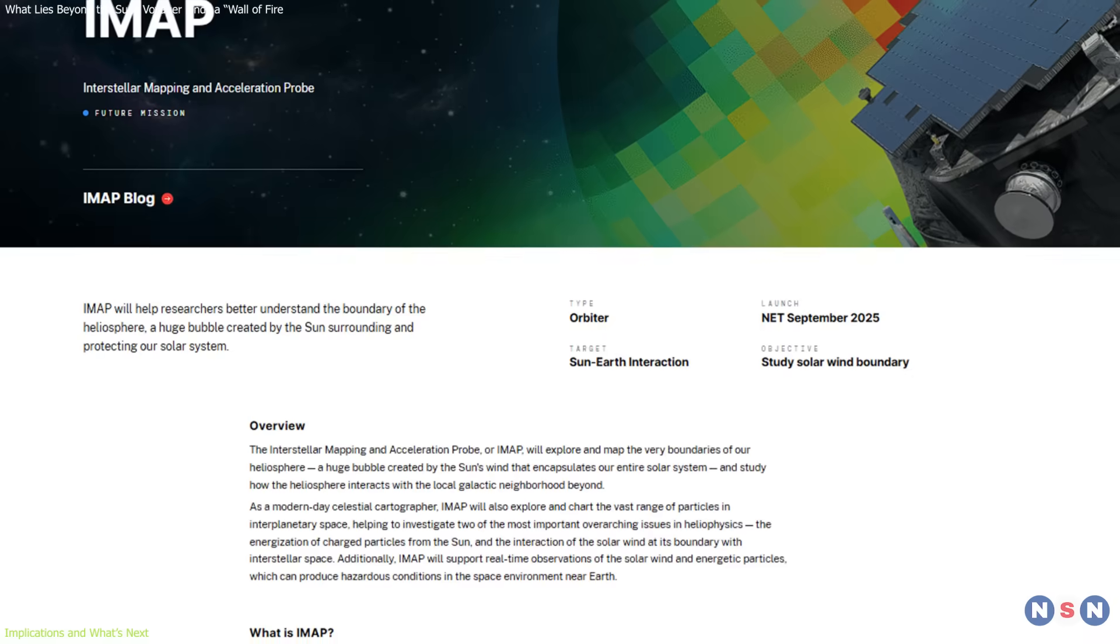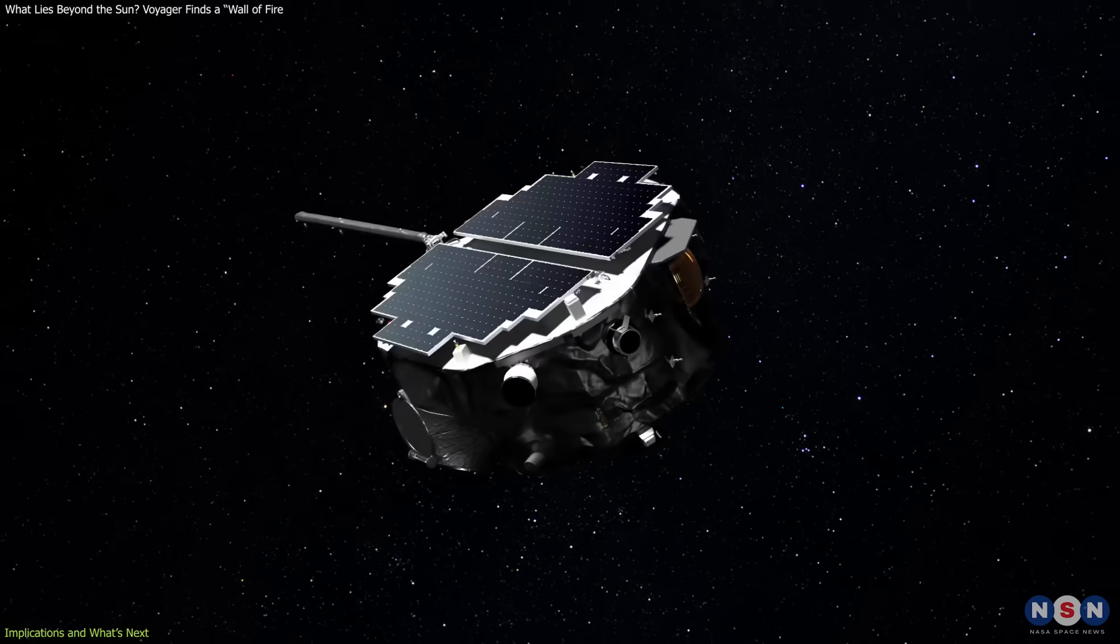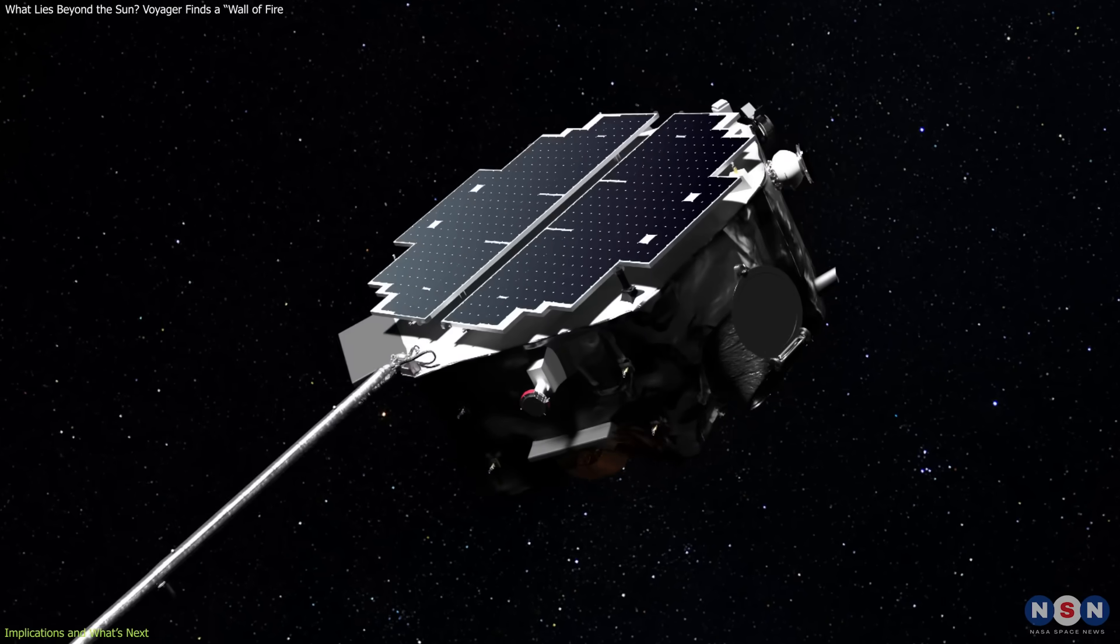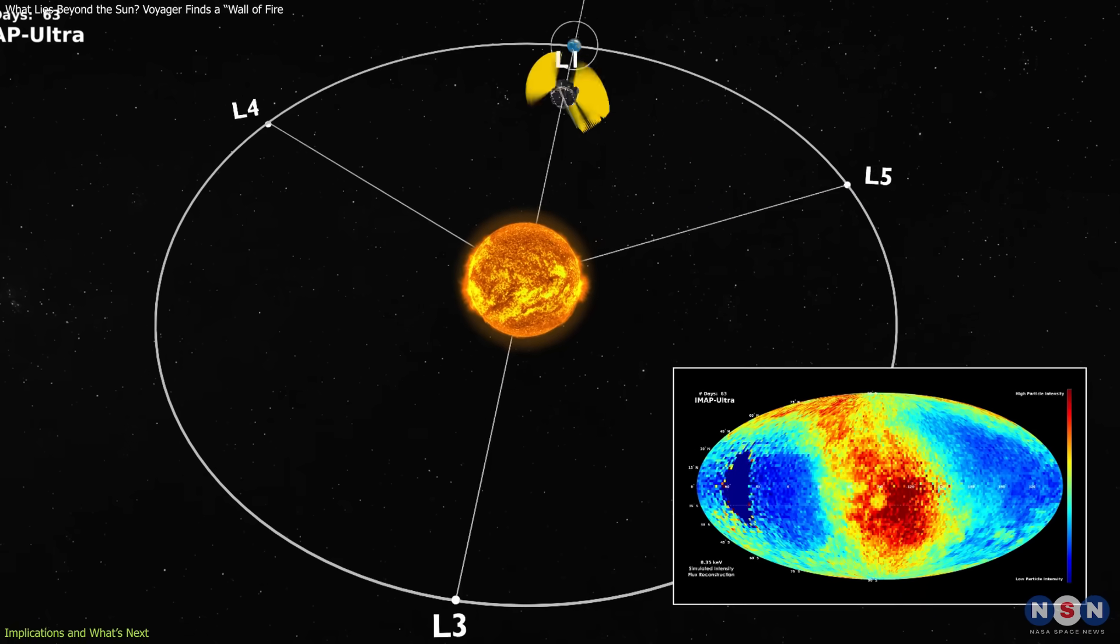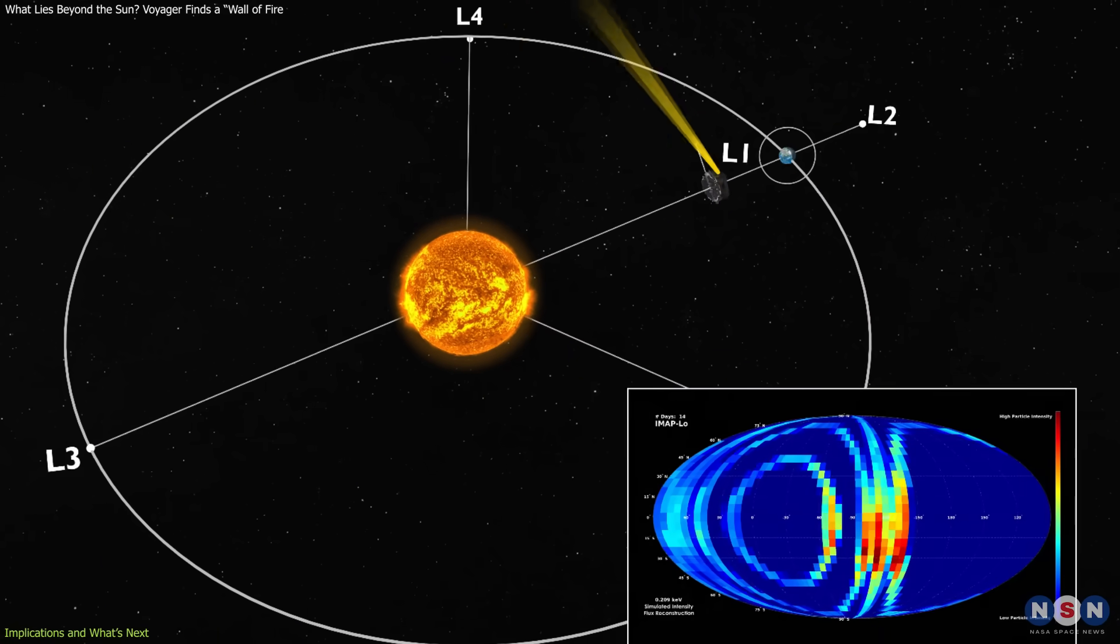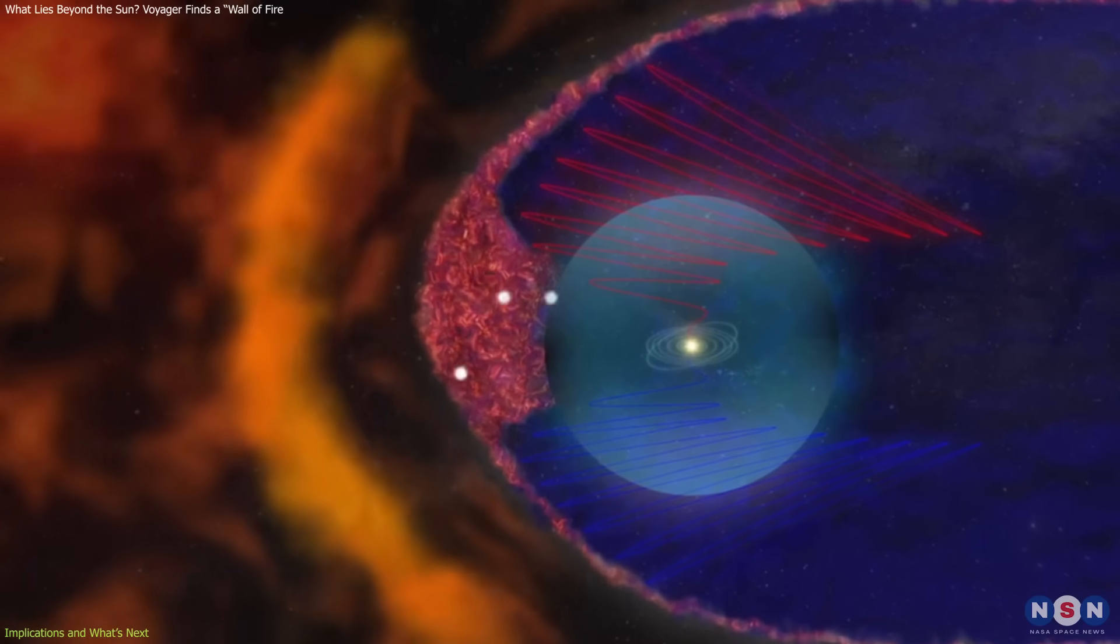NASA's upcoming Interstellar Mapping and Acceleration Probe, IMAP, scheduled for launch soon, will follow up on Voyager's discoveries. IMAP's advanced instruments will study how the solar wind interacts with interstellar space, providing critical context for the data collected by the Voyagers and helping decode the complex physics at the heliopause.